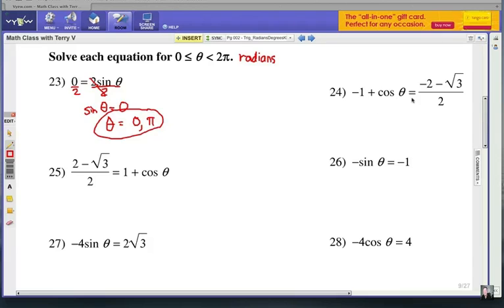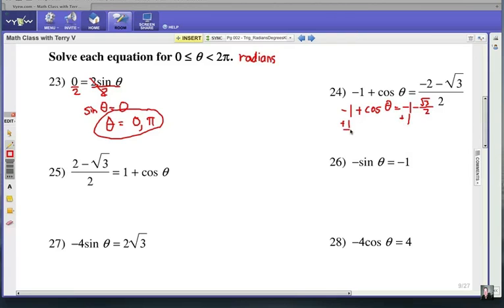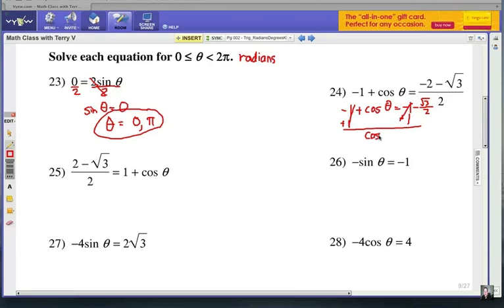Number 24. We're going to have to simplify this fraction over here on the right side and remember that negative 2 is being divided by the 2 and so is this √3. That 2 applies to both parts. So let's rewrite this, kind of simplify it a little bit. -1 + cos θ equals what's -2 divided by 2? That's got to be -1, right? And -√3 divided by 2. So -√3/2. Alright, if we add 1 to each side, that will of course cancel out the 1s on both sides. Alright, so here's what we have. cos θ equals -√3/2.